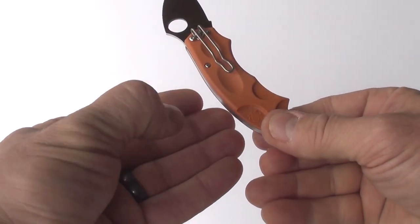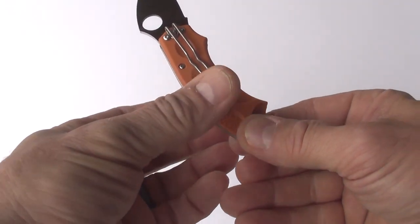To close the Meerkat left-handed, pull on the top scale with your thumb and push on the bottom scale with your fingertips.